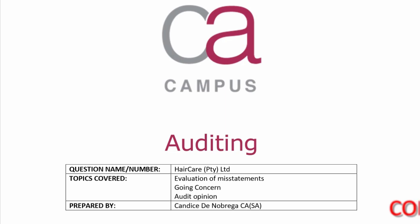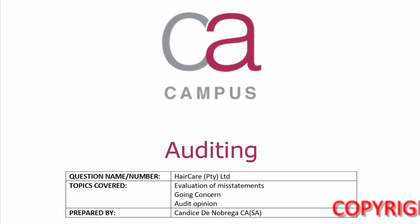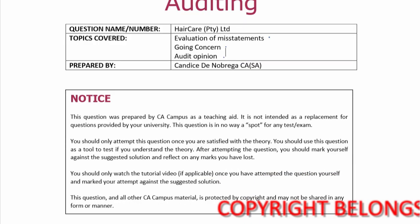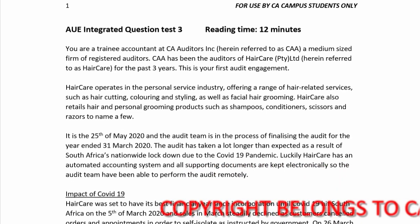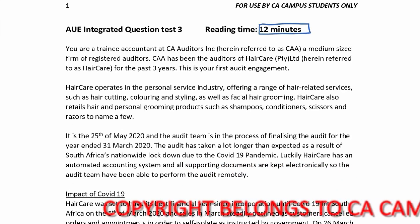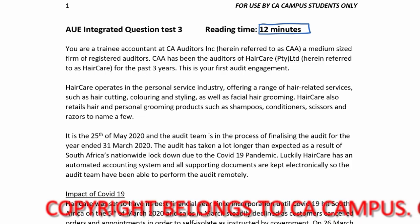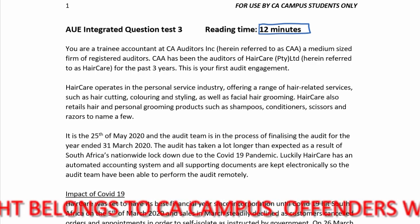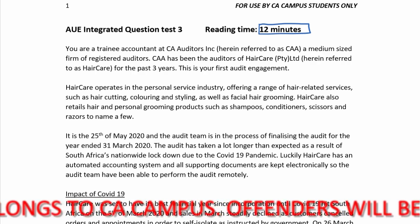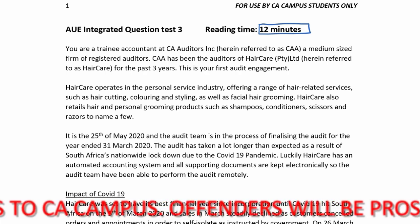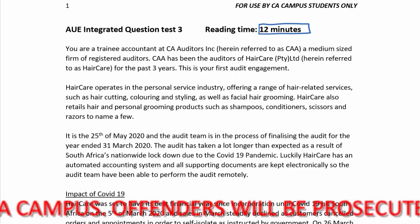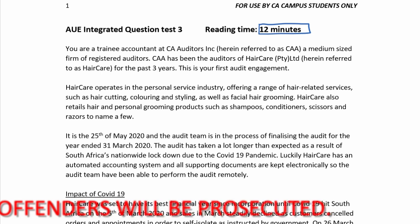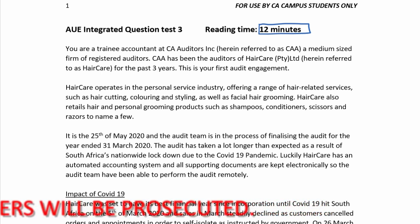Welcome to the auditing mock test for Test 3, covering the evaluation of misstatements, going concern, and audit opinion. Your reading time is 12 minutes. If you didn't stop after 12 minutes, go and see what is required. As soon as you have the opportunity to see what is being tested, look at that so when you return to the scenario you're trying to find the answers, not just reading through and making notes.